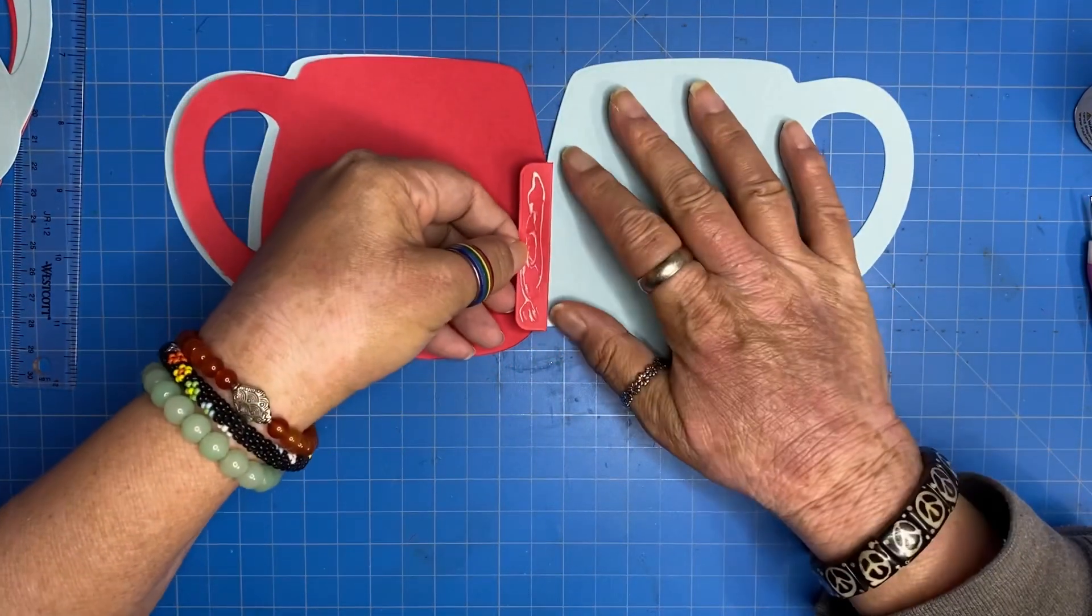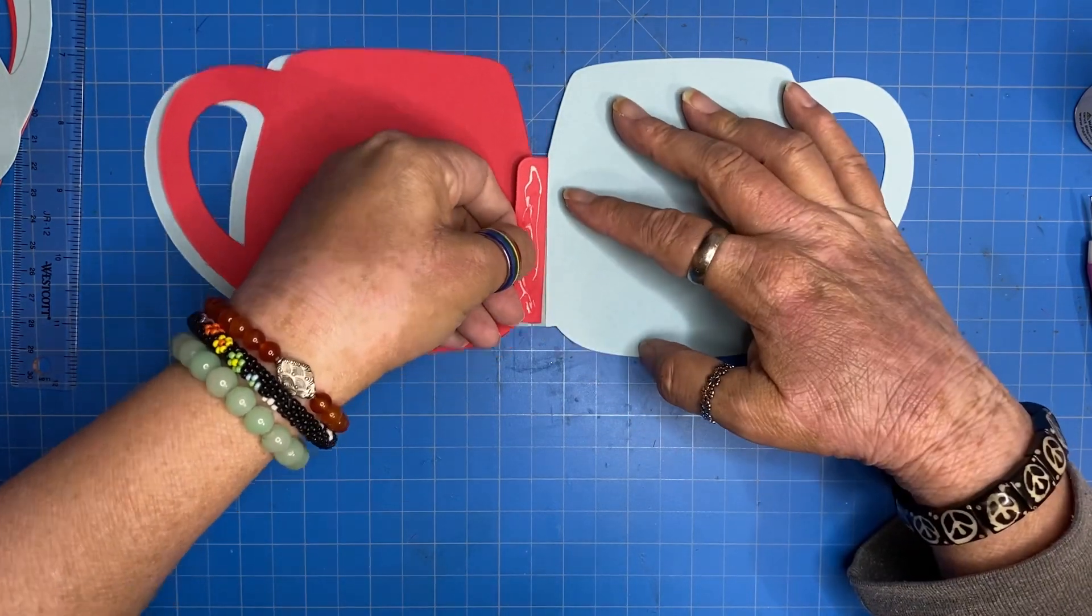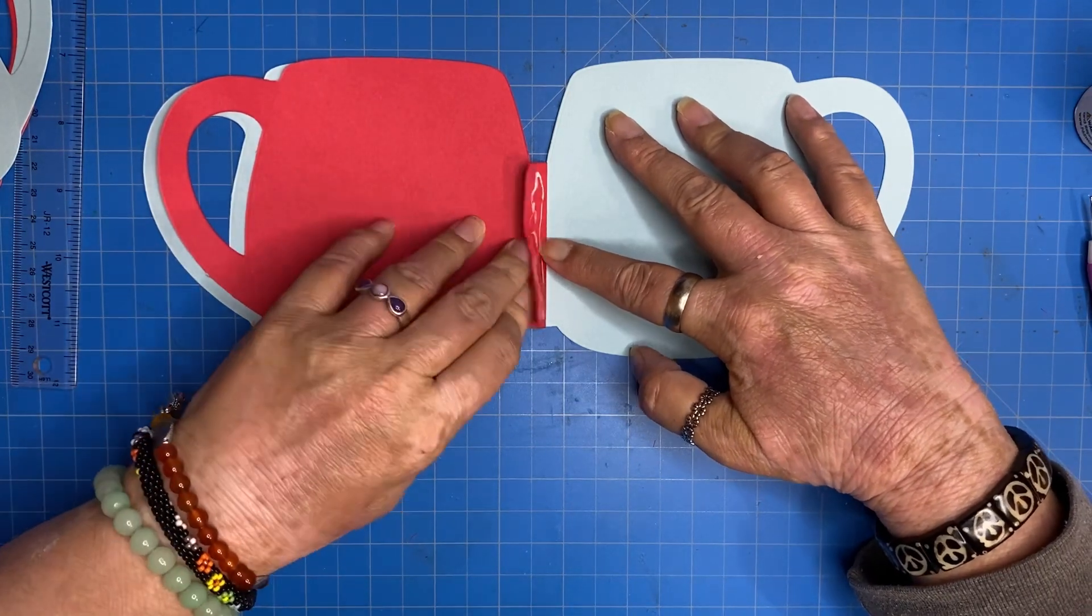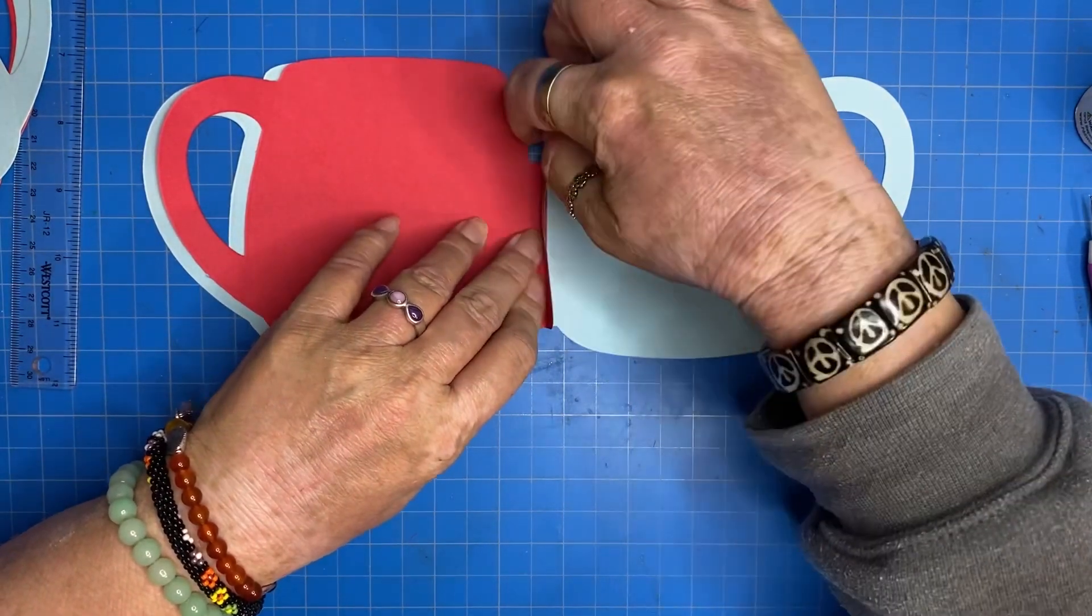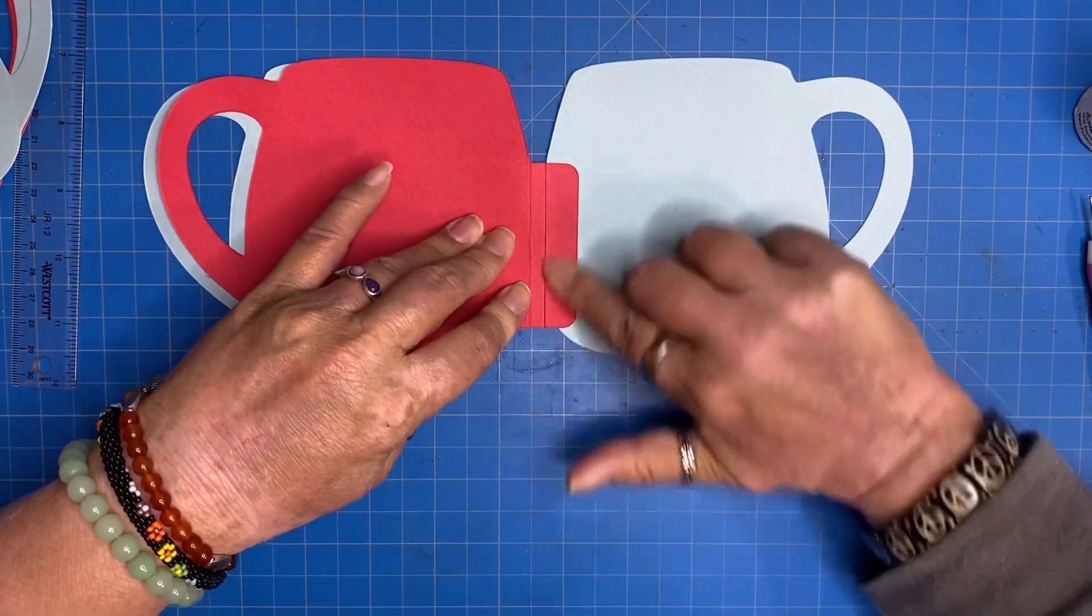So I'm just going to make those two seams, those two score lines meet. Make sure they are at the same height on the top and the bottom. And glue down your half-inch tab.